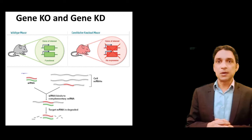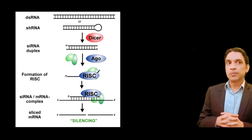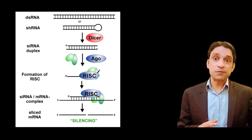We will be studying in this course how we can permanently delete a particular gene in the genome — that is what we call gene knockout. We will also study the temporary down-regulation of the function of a particular gene, which is called gene knockdown, using small interfering RNA.